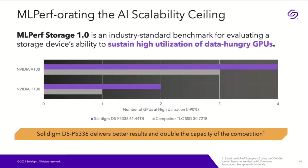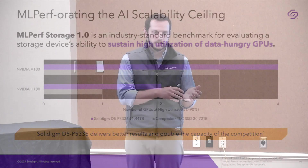The drive we're looking at here is the high-density QLC. We can share Gen5 performance results at a later date — that testing is ongoing. But even for the density-optimized devices, the results are quite striking. The purple bars on this chart represent our test results. It's a training test for MLPerf storage — they're working on building out other parts of the pipeline.